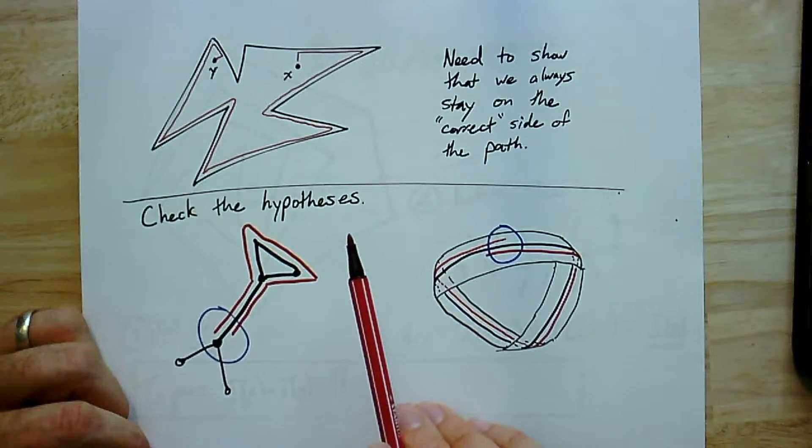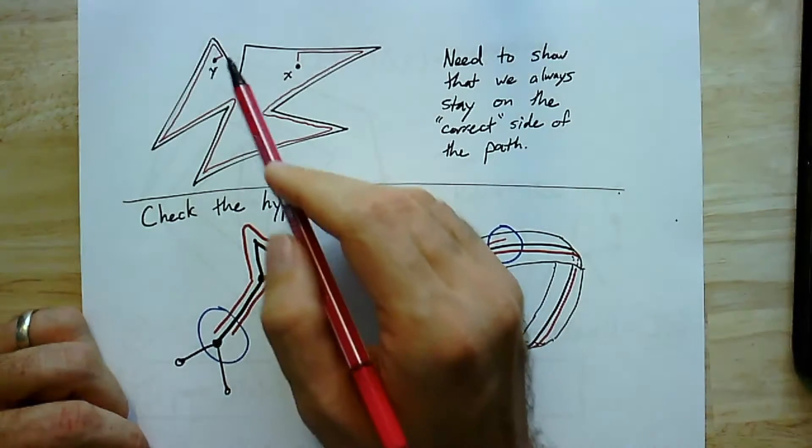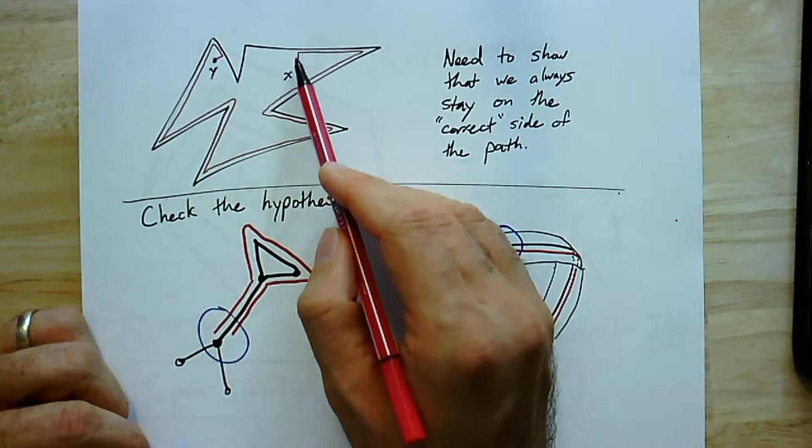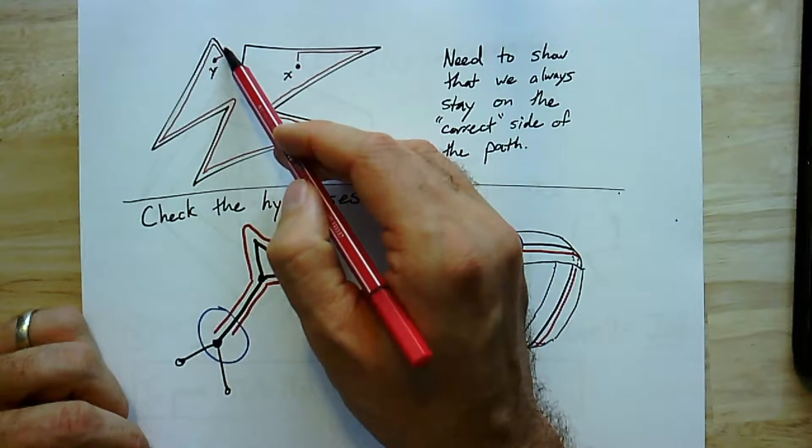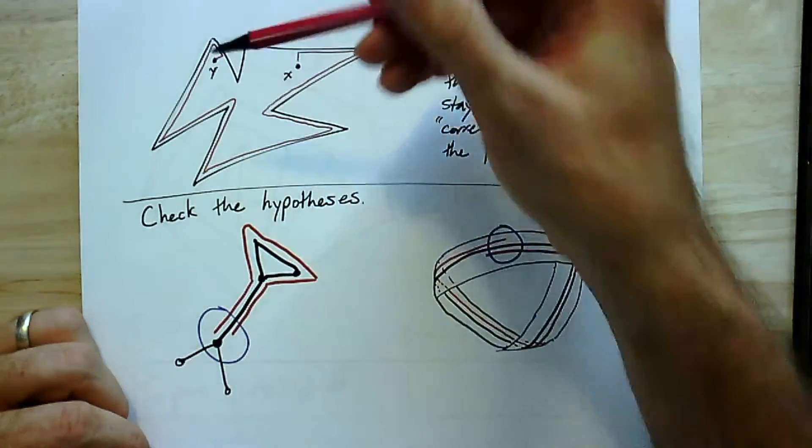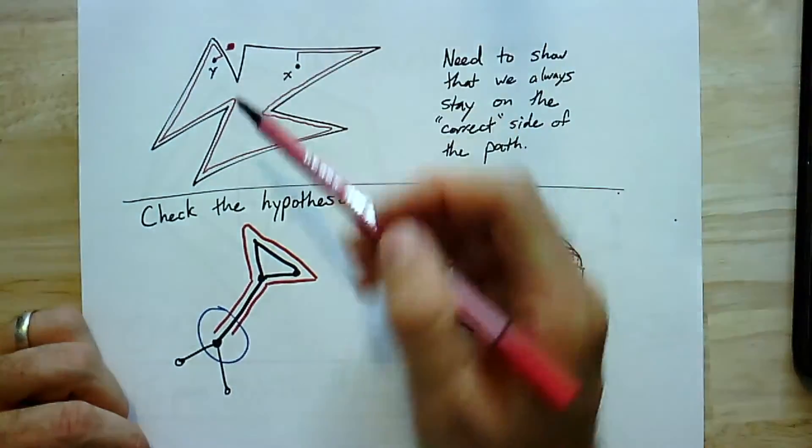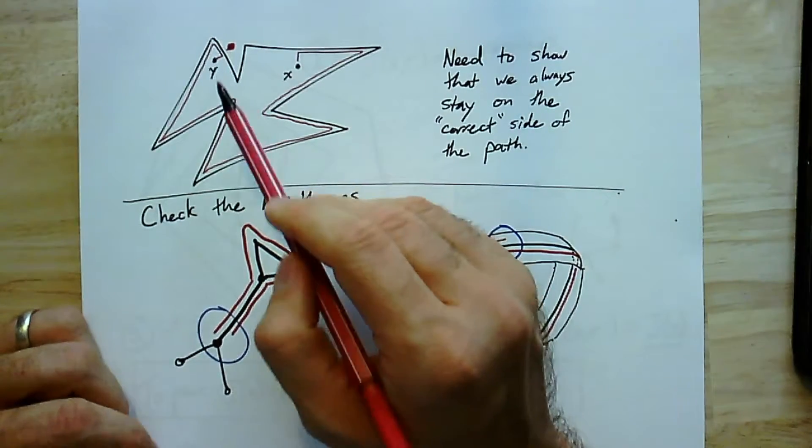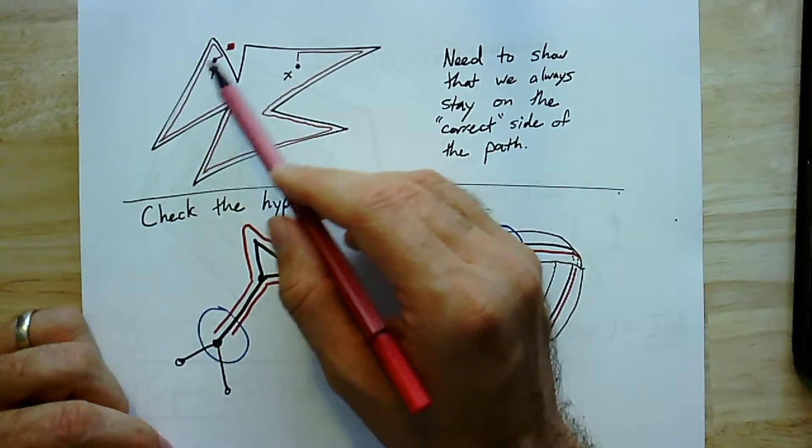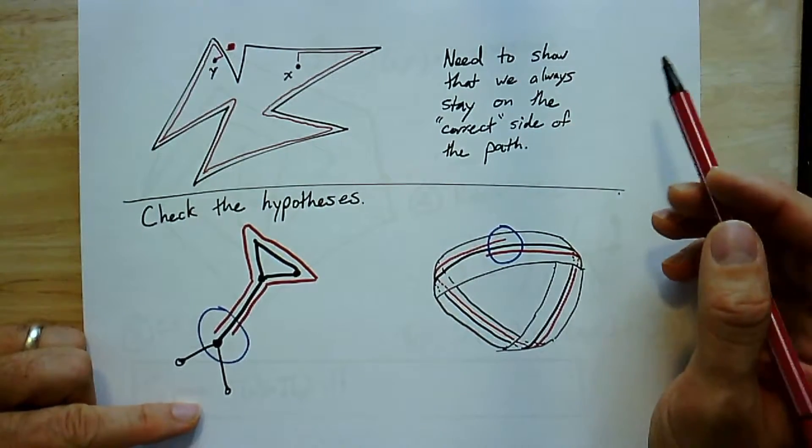So why is that useful? Well, in this case, for instance, here are two points inside a polygon. And if we walk in any direction until we hit the edge, we can walk along the edge of the polygon until we get to a point where we can just go straight to y. Now, in this case, this wouldn't have worked if we somehow, as we came around, we ended up on the wrong side of this edge.